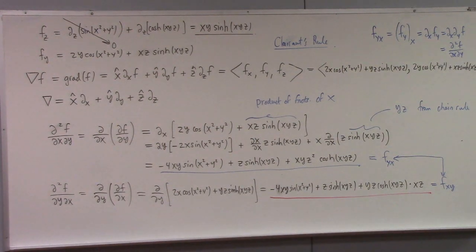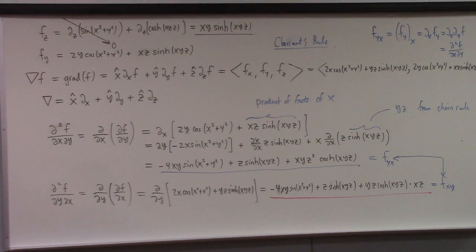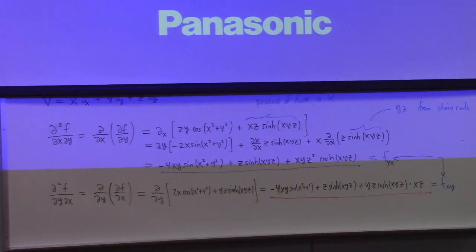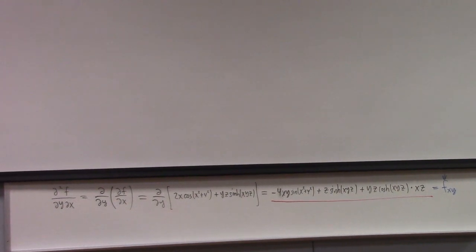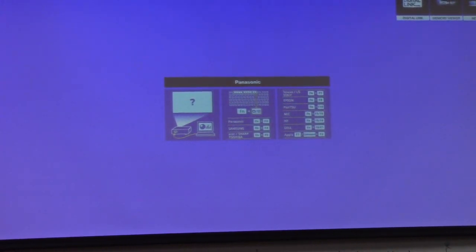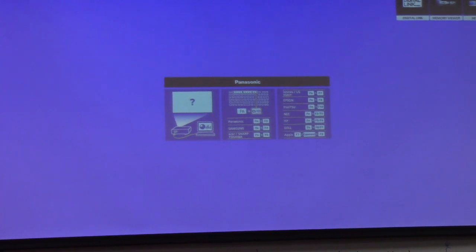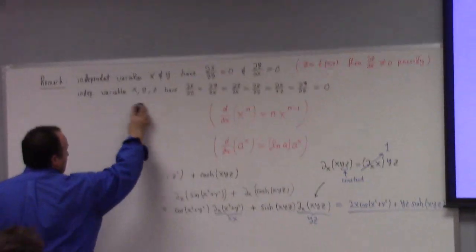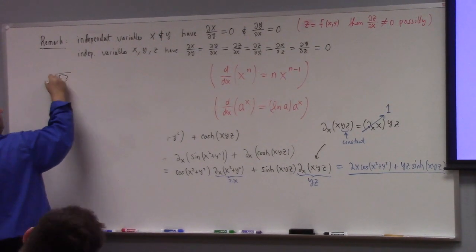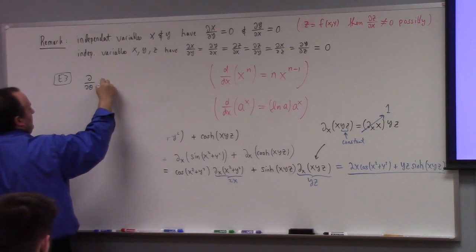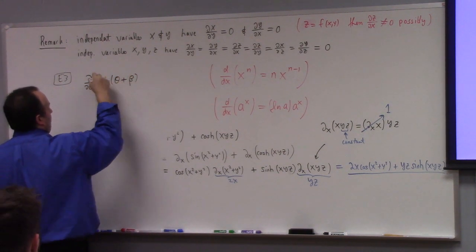One thing I should talk about briefly — and I'd rather project this because it's more of a cautionary tale. I have many more examples of partial derivatives in the notes; I encourage you to read through those and make sure they make sense. Example 3: what if I'm computing the partial with respect to theta of sine(theta + beta)? That works out to cosine(theta + beta) times the partial of the inside, which is just one — assuming partial beta / partial theta is zero, meaning they're independent variables.